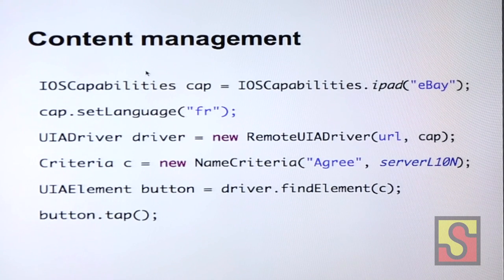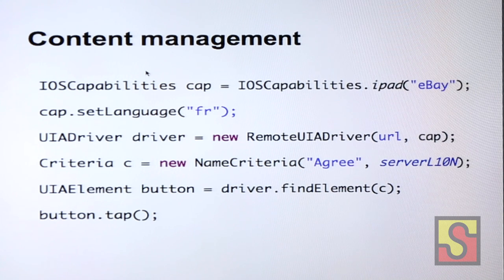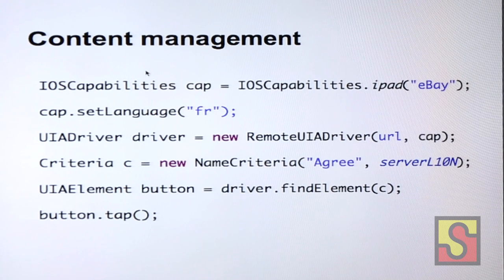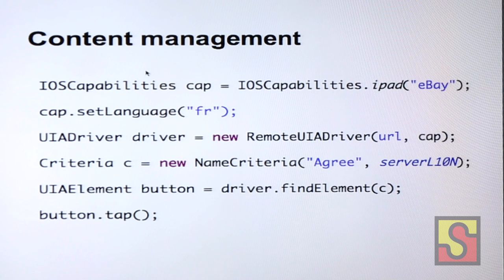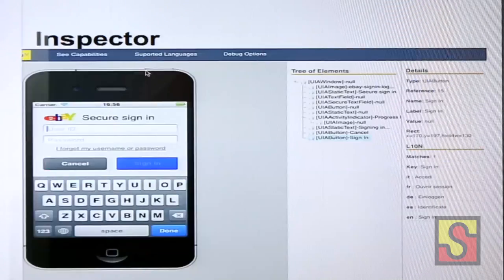Here's what it looks like when you put all the pieces together. In this example, I set the bundle name to eBay for iPad and set the language to French. I start my remote connection to the server and pass these capabilities, which starts the simulator for the iPad with the eBay app already loaded. When I want to click the agree button for the French version, I don't need to localize it myself — I pass 'agree', which is the key. The server localization flag handles the translation automatically, so by the time it reaches Instruments it already has the right value. Then I call find elements to get my button and call tap on it.